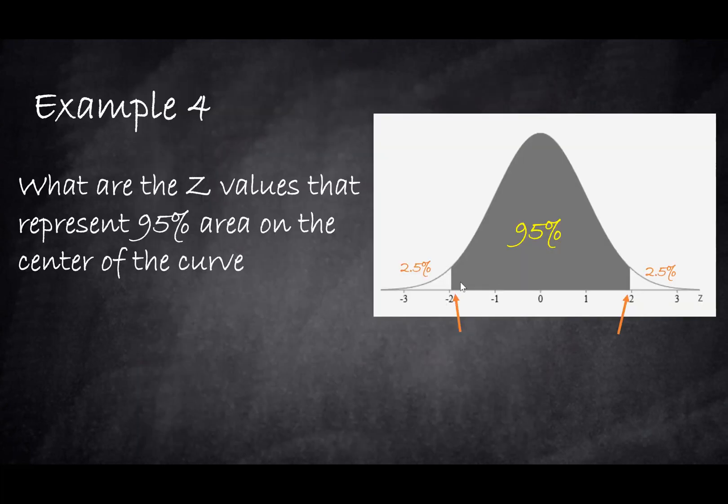Now because we have 2.5% in both sides, the Z value for the right-hand side will just be the positive 1.96. Again, symmetry is the key here, and both areas and both Z values are the same.